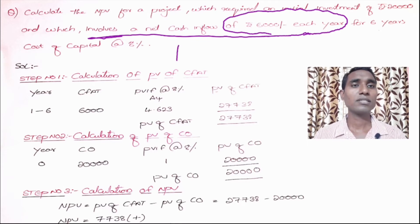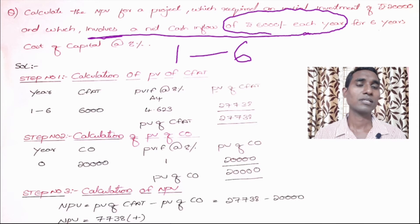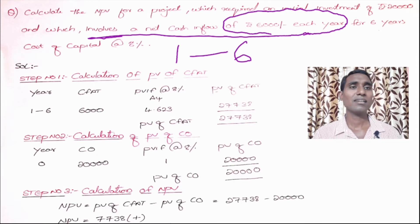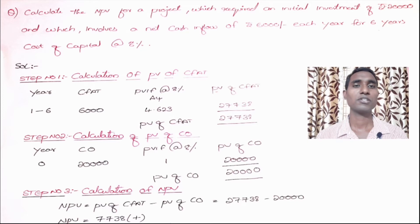The life of the project is six years, so one to six. Till the sixth year I will be getting every year 6,000 rupees as cash inflows. In this case a simple method can be used. The computation procedure is slightly changed, but the steps remain the same.